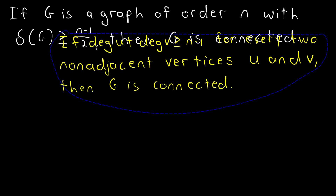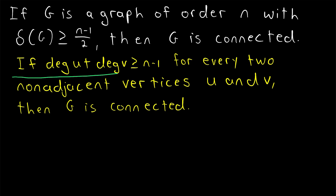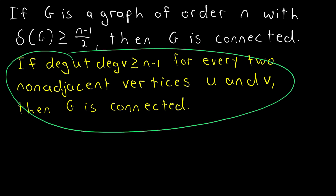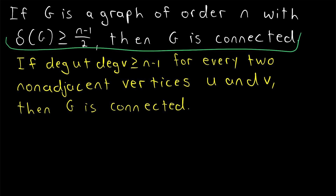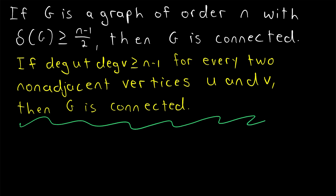We're going to use another theorem to prove this one. This theorem states that if the degree sum of every two non-adjacent vertices in our graph is greater than or equal to n minus 1 — that's one less than the order of the graph — then g is connected. I've already done a lesson proving this theorem, so I'll leave a link in the description, but since it's an easy proof, we'll run through it quickly in this lesson.